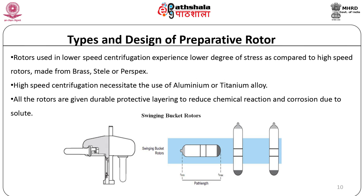Types and design of preparative rotors. Rotors used in lower speed centrifugation experience a lower degree of stress compared to high speed rotors and can be made from brass, steel, or perspex. High speed centrifugation necessitates the use of aluminum or titanium alloy. All rotors are given a durable protective layering to reduce chemical reaction and corrosion due to the solvent.